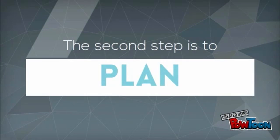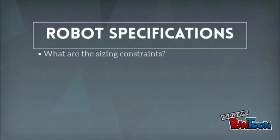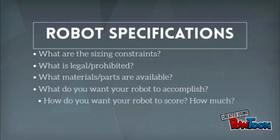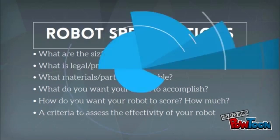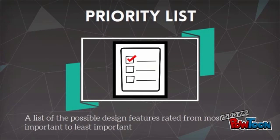Then move on to the second step of the design cycle, which is to plan. Develop robot specifications answering these questions. Then make a priority list rating the features you want to incorporate into your design.